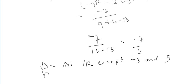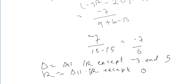The range is all real numbers except zero, because we can never get zero as an output. We can get any number from negative infinity to positive infinity, but zero can never be our output. If the function equals zero, it would be undefined. So the range is all real numbers except zero.